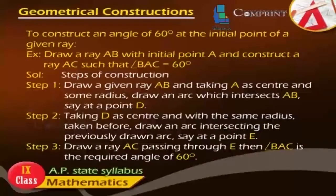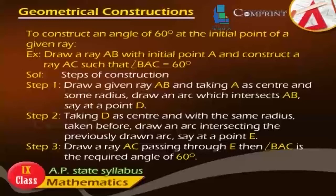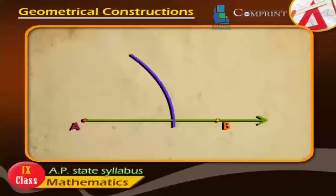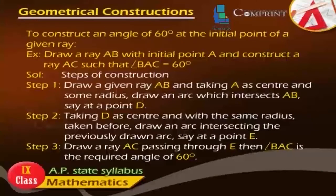To construct an angle of 60 degrees at the initial point of a given ray. Example: Draw ray AB with initial point A and construct a ray AC such that angle BAC is equal to 60 degrees. Step 1: Draw a given ray AB and, taking A as center and some radius, draw an arc which intersects AB at a point D. Step 2: Taking D as center and with the same radius, draw an arc intersecting the previously drawn arc at a point E.